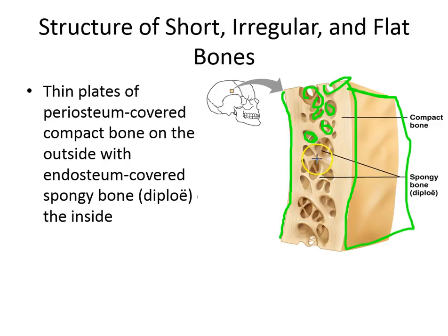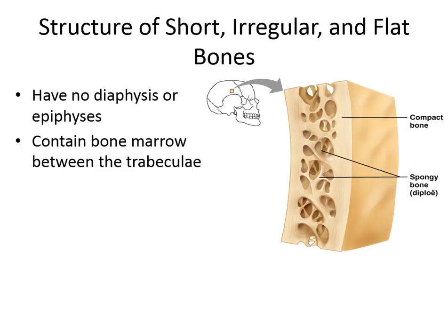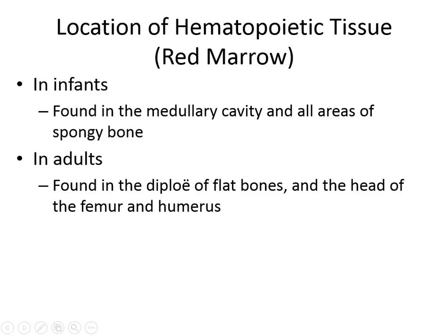You've got the trabeculae — these beams — holding everything together, with red bone marrow in the middle. Red bone marrow in infants is found everywhere in spongy bone and in the medullary cavity of long bones, but in adults it's only in the spongy bone of flat bones and the heads of your humerus and femur.